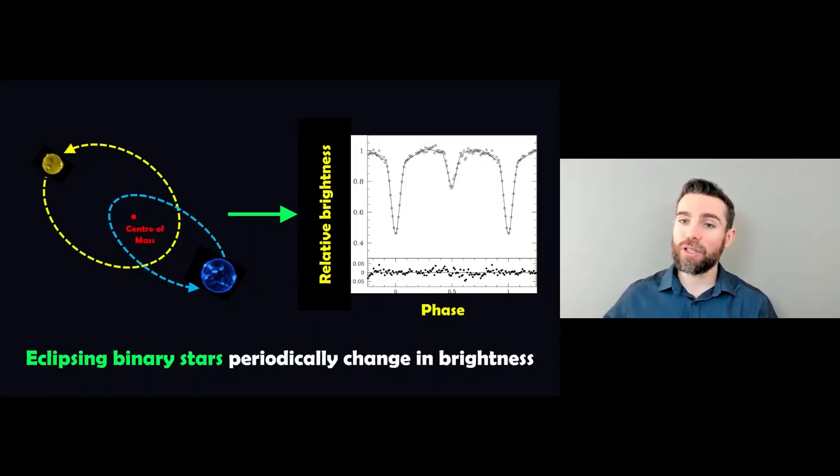There is also another type of variable star that gives you a periodic change in brightness, and these are eclipsing binary stars. So these actually block out the light from each other, and you get a dip in brightness as they pass in front of each other, and you get this sort of structure here from their light curve. Again, it looks quite different, but it does give us a periodic change in their brightness nonetheless.